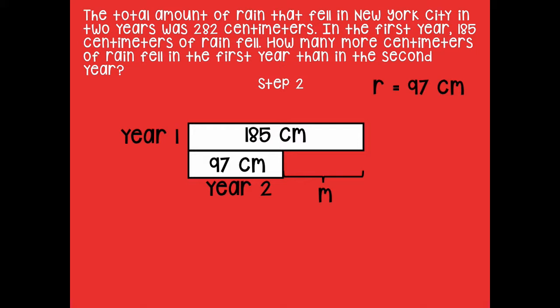What do you think our equation could be to solve this part and find out how many more? When you're finding out how many more, you're typically going to subtract to find the difference. So I'll set it up vertically again. Go ahead and pause the video, solve this problem to find what M represents for the unknown, and click play when you're ready to go over it together.